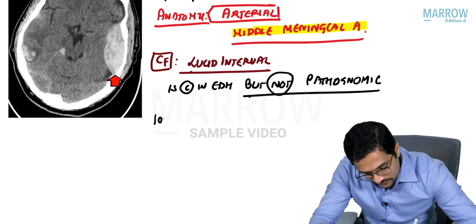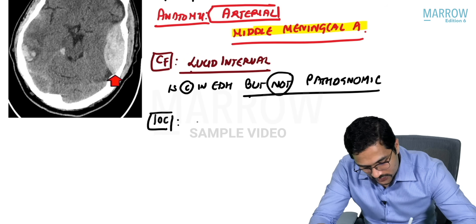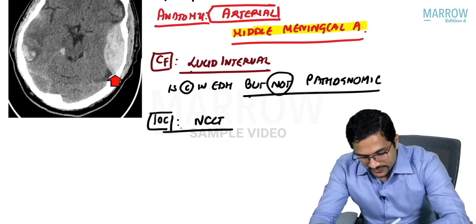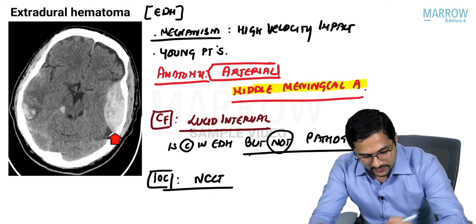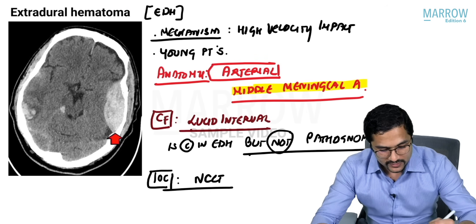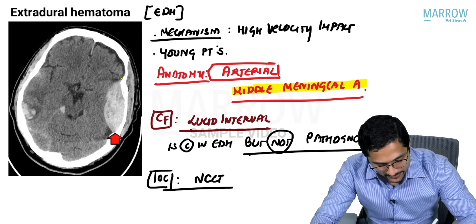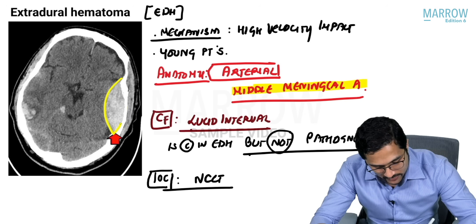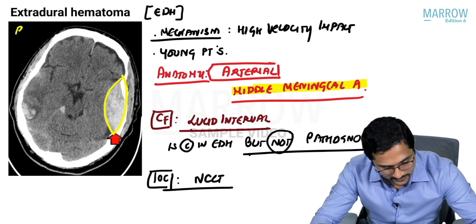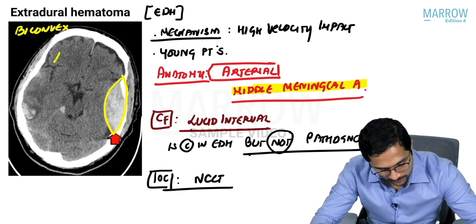The investigation of choice for extradural hemorrhage is NCCT. On NCCT, you will see a biconvex or lens-shaped hemorrhage.